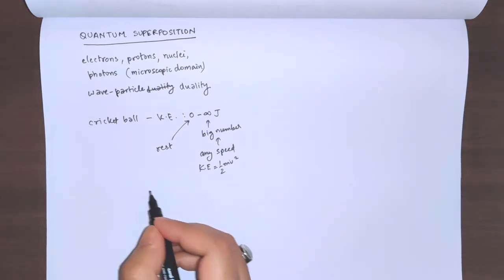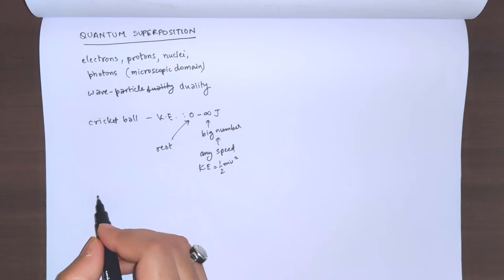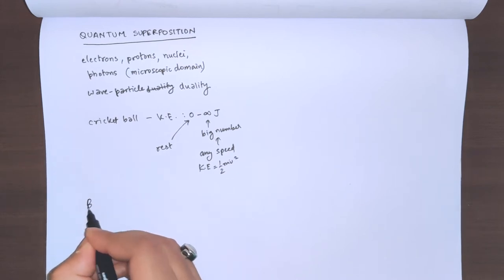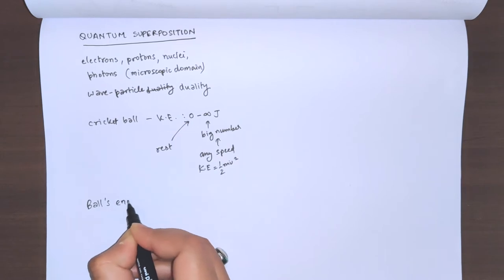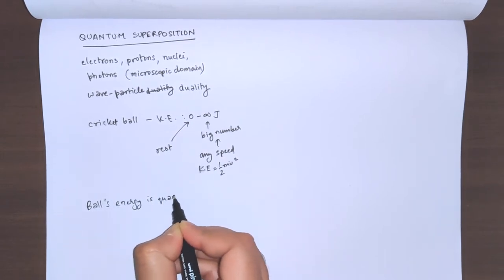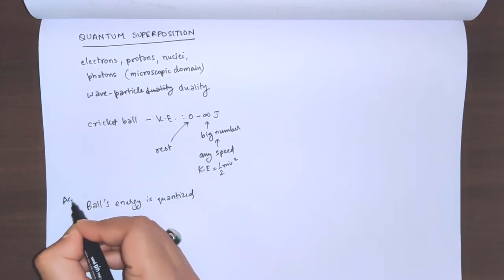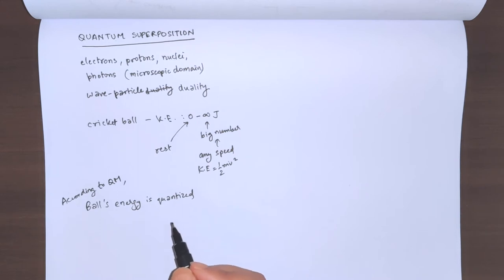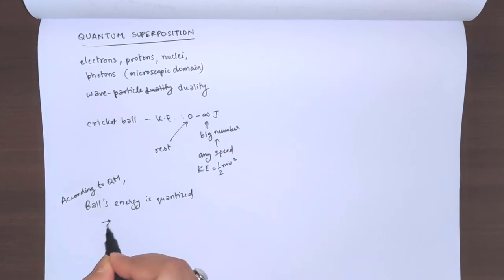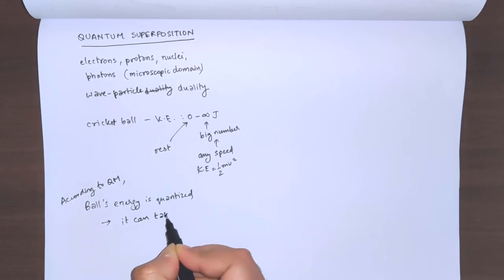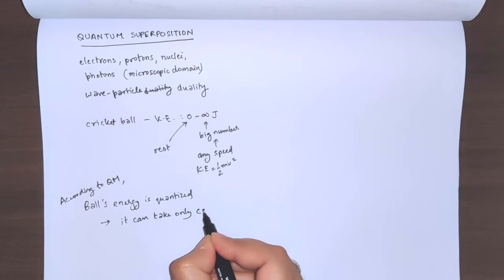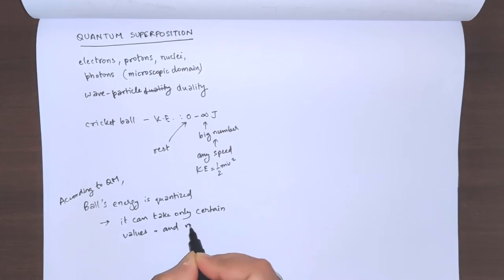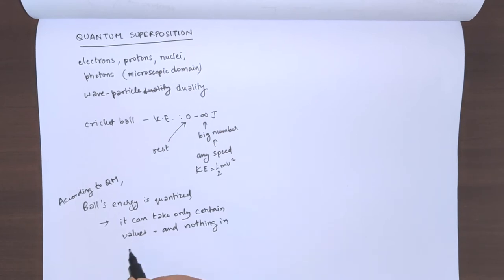But what quantum mechanics says is that the energy of the cricket ball is quantized. The ball's energy is quantized. According to quantum mechanics (I'll be abbreviating quantum mechanics as QM), the ball's energy is quantized. This means that it can take only certain values and nothing in between.